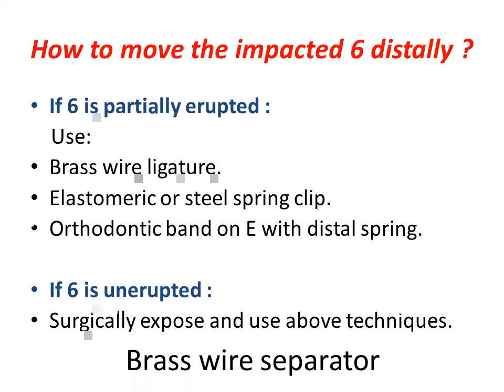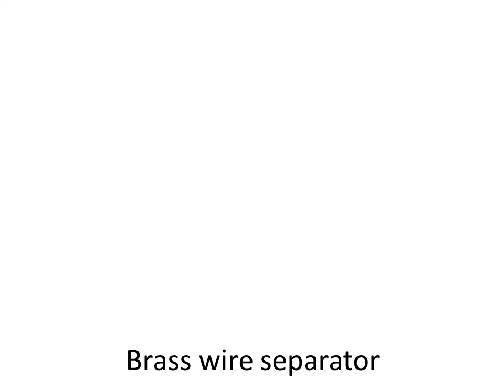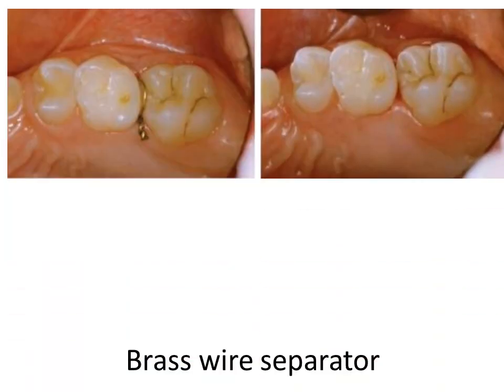The first technique is the use of a brass wire separator. This clinical photograph shows improvement in the position of the ectopically erupted sixth following the use of brass wire in the contact between the E and the sixth.